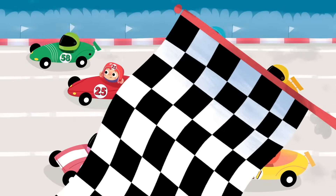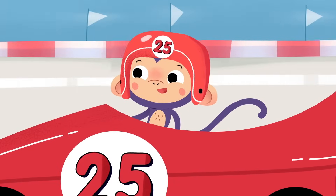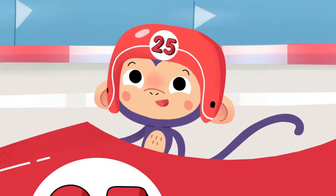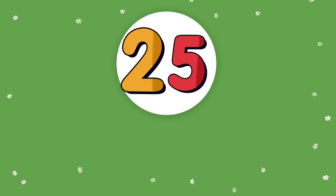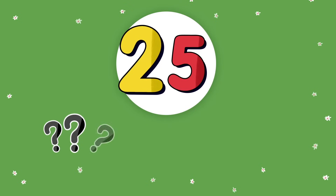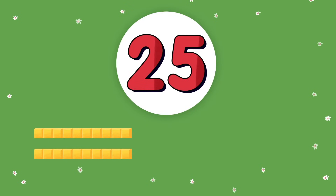On your mark, get set, go! See the number? It's number 25. We can look at the digit in the tens place first to help compare numbers. How many tens does my number have? 25 has two tens. It also has five ones.